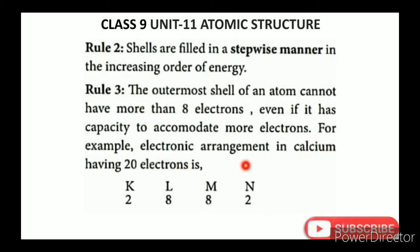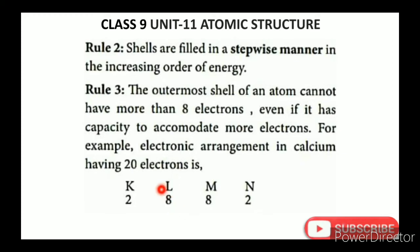For example, the electronic arrangement in calcium, which has 20 electrons. The shells K, L, M, N are filled as follows: K gets 2 electrons, L gets 8 electrons — that accounts for 10. The remaining 10 go to M shell, but due to Rule 3, M gets 8, and the remaining 2 go to N shell. So calcium's configuration is 2, 8, 8, 2.